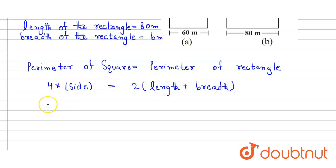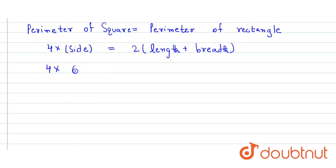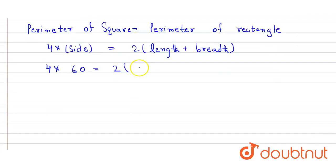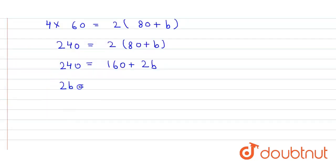Now we simply substitute the values. So 4 × 60 equals 2 × (80 + B). That gives us 240 equals 160 plus 2B. After solving, 2B equals 240 minus 160, so the value of B equals 80 divided by 2, which is 40 meters.